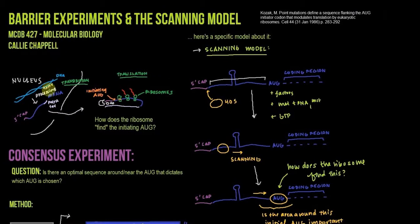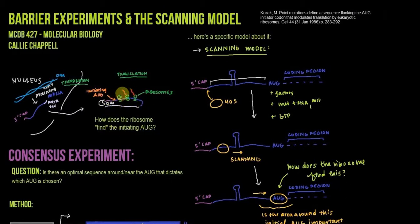So we're talking about eukaryotes. In eukaryotes, we have transcription occurring in the nucleus, and then post-transcriptional processing to produce a mature mRNA. That mature mRNA gets exported into the cytoplasm where translation occurs. Ribosomes come onto the mRNA and, starting at the initiating AUG, start translation. The key question we want to know is how does the ribosome actually find that initiating AUG?